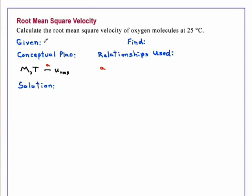We're given oxygen molecules. Oxygen occurs naturally as the diatomic molecule O₂, and we're given a temperature of 25 degrees Celsius. We're asked to find the root mean squared velocity.